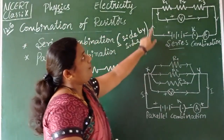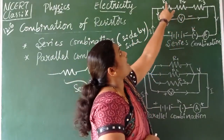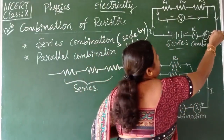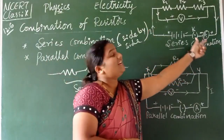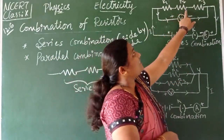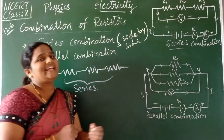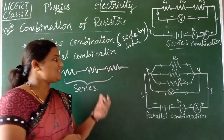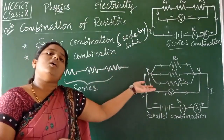When a number of resistors with resistances R1, R2, and R3 are connected side by side using a battery, plug key, and ammeter, this type of combination is called series combination. The first resistor is connected side by side to the second, and the second to the third. Series means the resistors are connected side by side, forming a horizontal line.